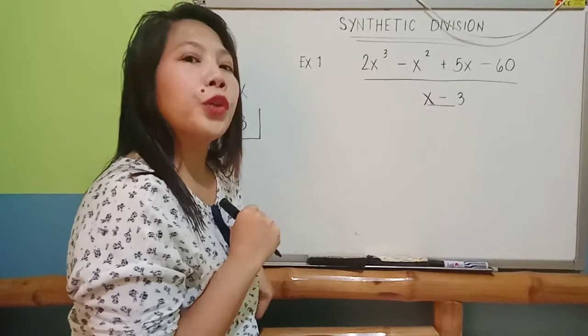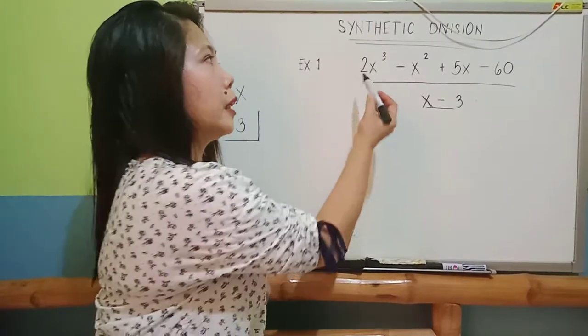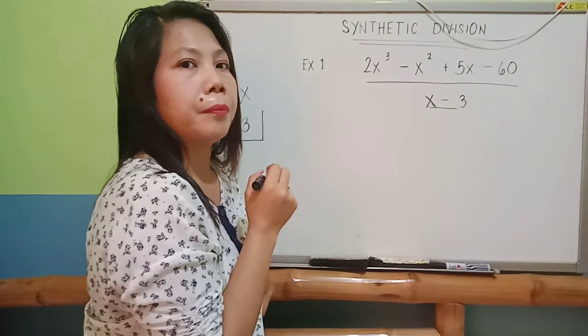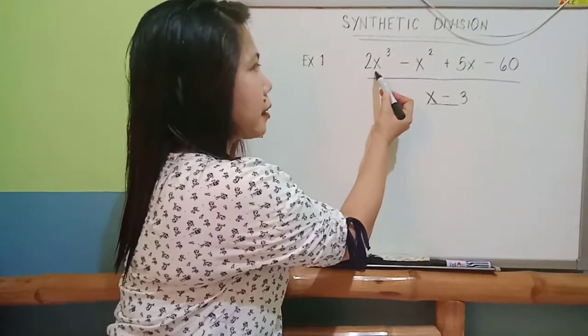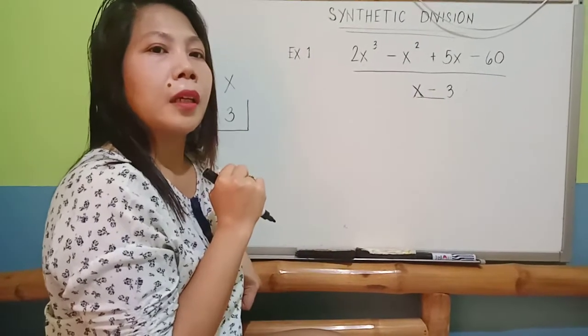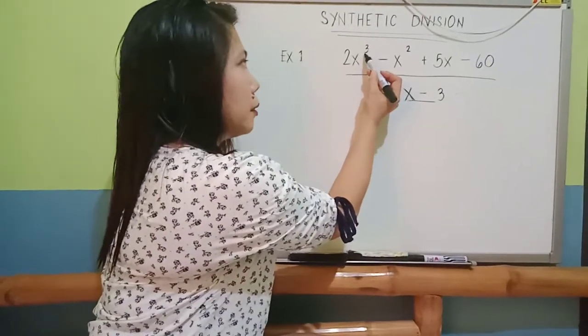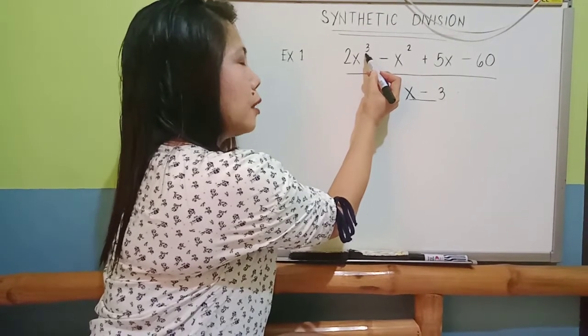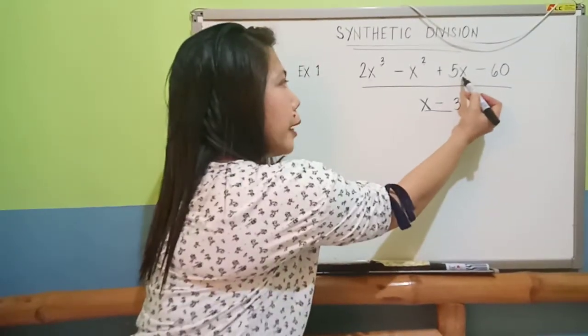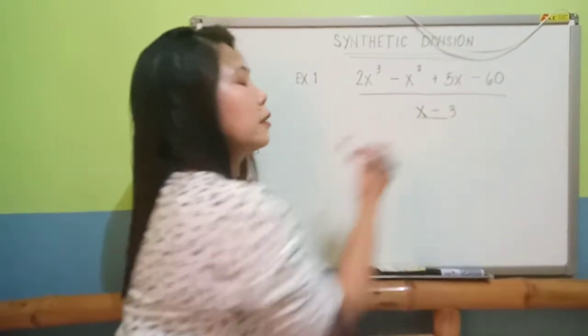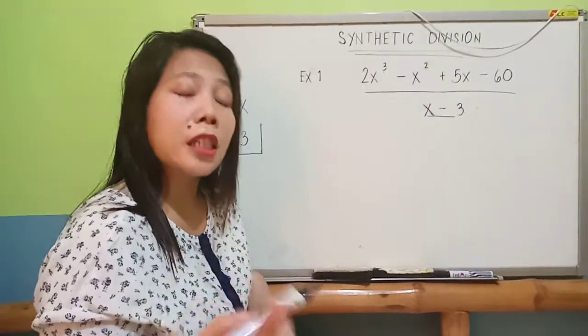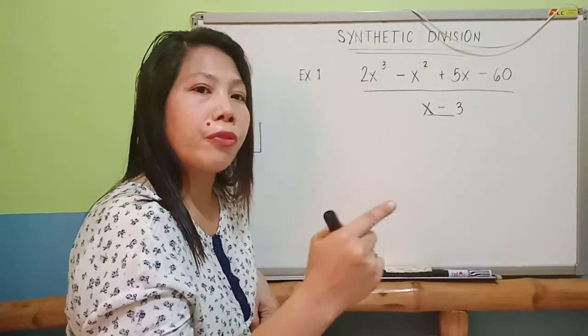Next, you have to observe for the arrangement of your dividend or the polynomial on your numerator. As you can see, your x's here are in the decreasing arrangement. You look for the exponent. You start with exponent of 3, followed with an x with exponent of 2, then an x with an exponent of 1, and then a constant. 3, 2, 1, and a constant. Therefore, this is properly arranged in a decreasing order of your terms.